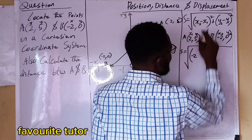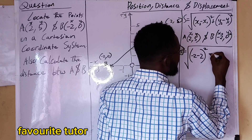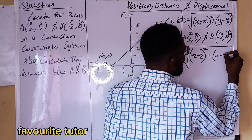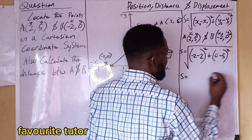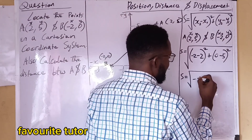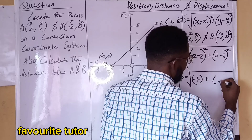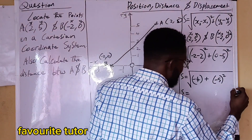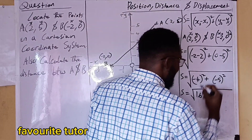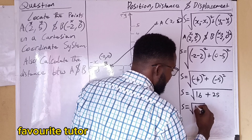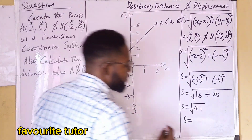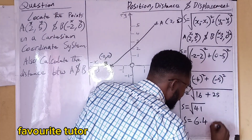x2 minus x1 is minus 2 minus 2, which gives minus 4. y2 minus y1 is 0 minus 5, which gives minus 5. So the distance equals the square root of (-4) squared plus (-5) squared, which is the square root of 16 plus 25, which equals the square root of 41. So the distance between point A and B is 6.4 units.